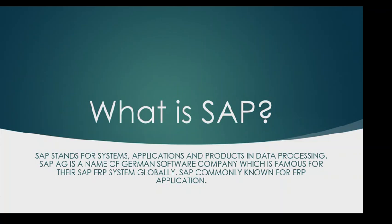SAP is the name of a company based in Germany. It is mostly famous for its ERP system globally — 90% of Fortune 500 companies have SAP systems to run their business, covering sales, accounting, procurement, and many different applications.